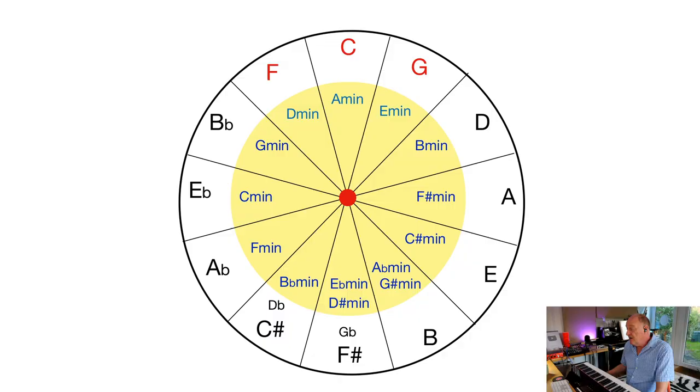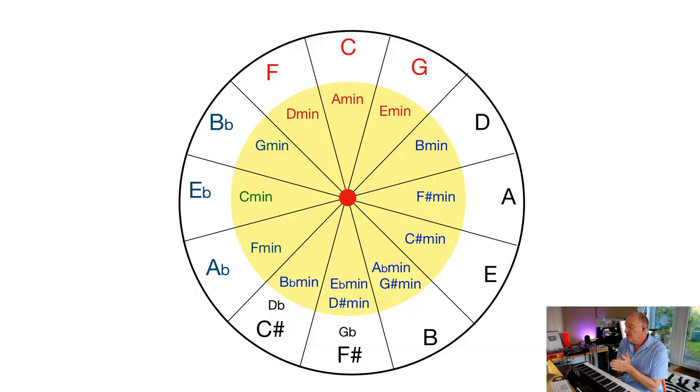So the inner circle are the relative minors. And you will notice, not surprisingly, they also go up by a fifth each time. Now, remember when we started — I said you've got to think about these as keys, not notes or chords. Let's just for one moment set that to one side and think about them as chords.